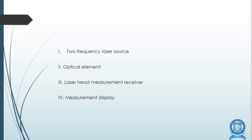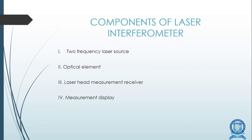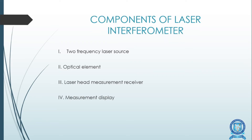Now we are going to see the components of a laser interferometer. There are four main components: first, the two-frequency light source; second, the optical element; third, the laser head measurement receiver; and fourth, the measurement display.